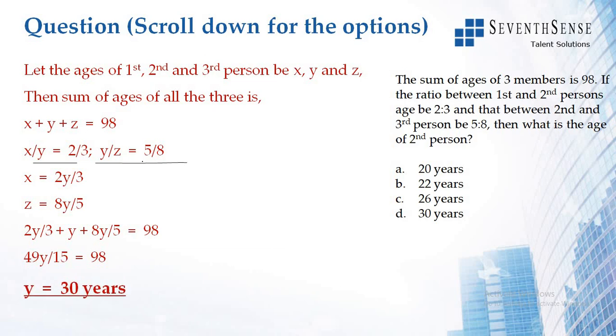When you simplify it, you get the value of y as 30 years. So the second person's age is 30 years, which is option D.